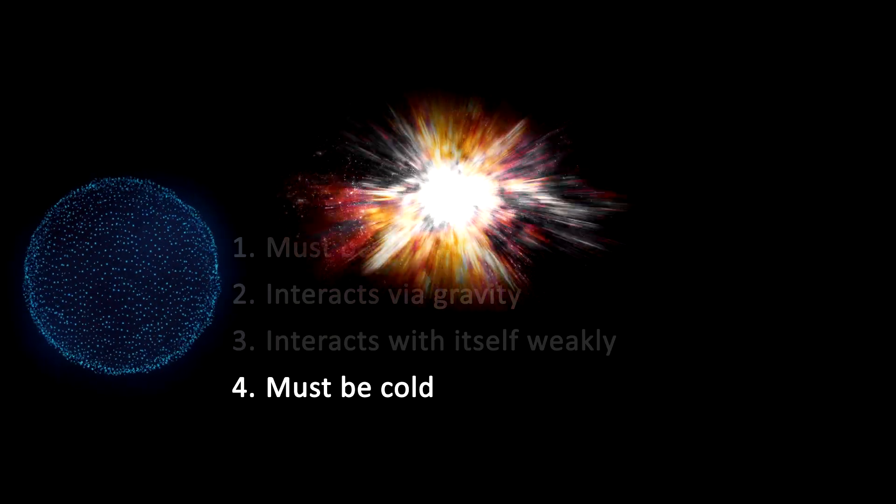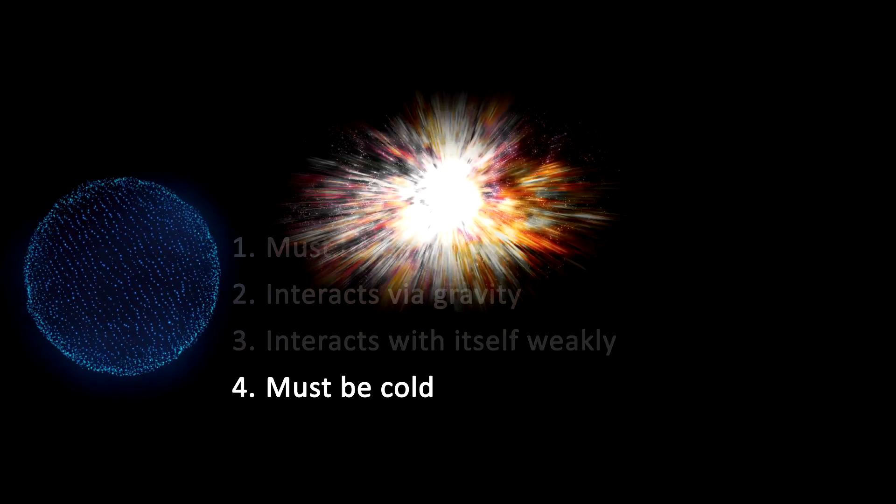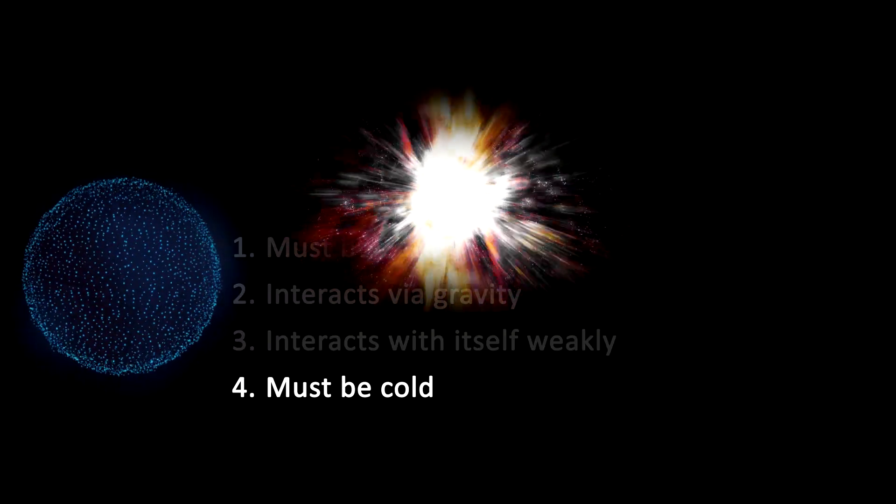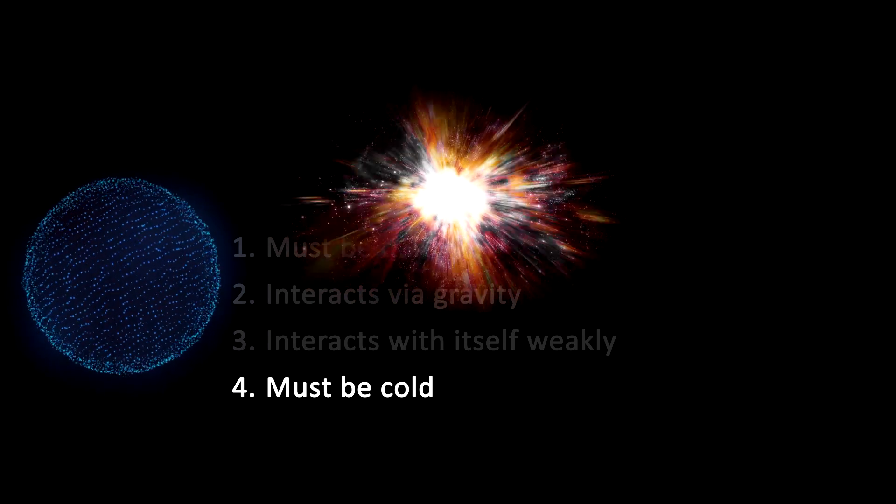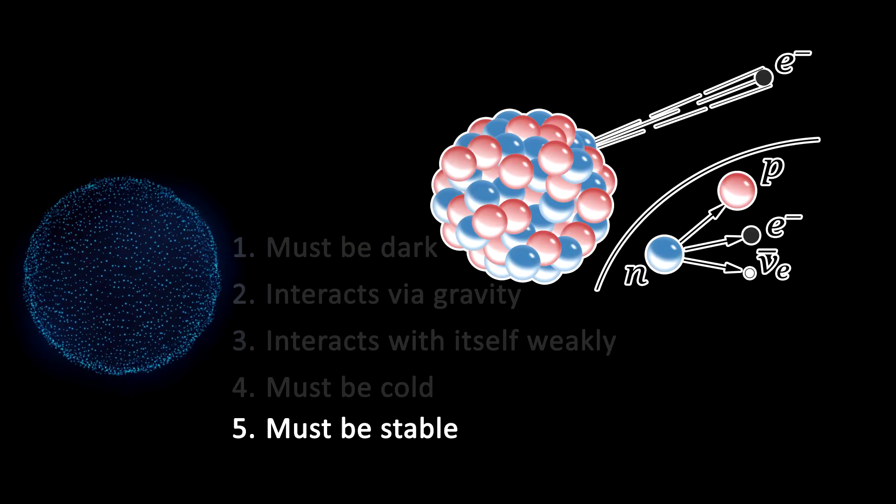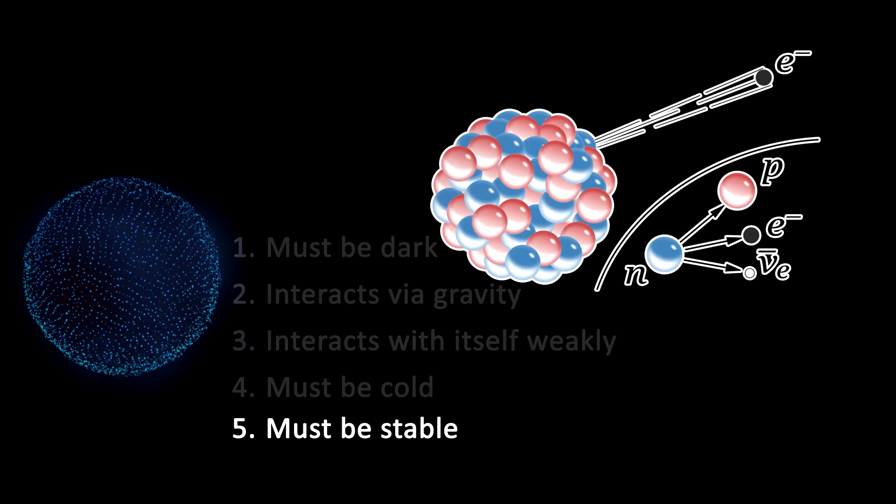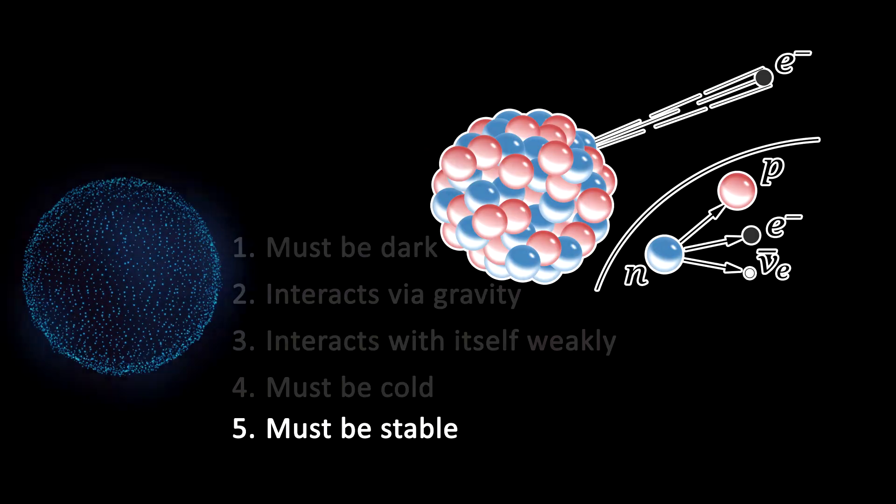Fourth, it must be cold. That is, it is not moving at very high speeds, because if it was, then after the big bang, it would have just kept on going and not slowed down to form halos around ordinary matter. And five, it must be stable. That is, it does not decay, because if it decayed into other particles, it wouldn't still be here now in such large quantities, 13.8 billion years after the big bang.